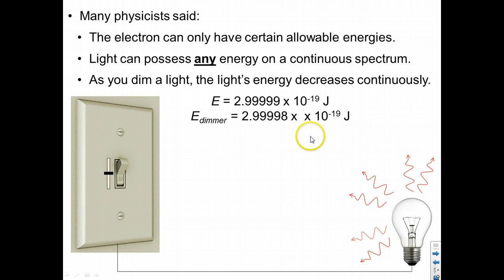And the energy of this dimmer light, many physicists thought, would be just infinitesimally smaller, assuming we barely lower the slide over here.